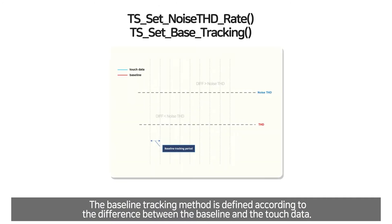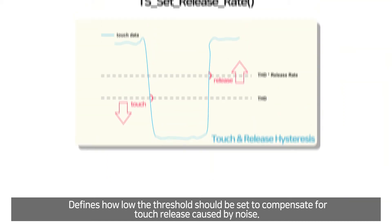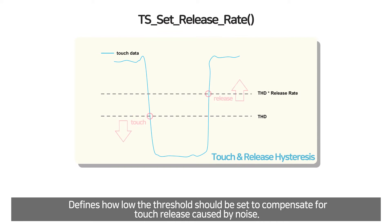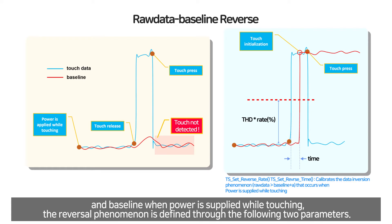The baseline tracking method is defined according to the difference between baseline and touch data. Define how low the threshold should be set to compensate for touch release caused by noise. In order to recover the data reversal phenomenon between touch data and baseline when power is supplied while touching, the reversal phenomenon is defined through the following two parameters.